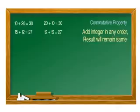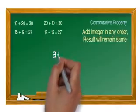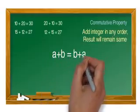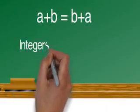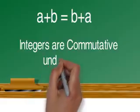If a and b are two integers, you can add a and b in any order — a plus b or b plus a — and the result will remain the same. So we can say a plus b is equal to b plus a. Integers are commutative under addition.